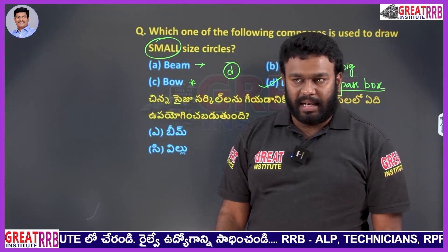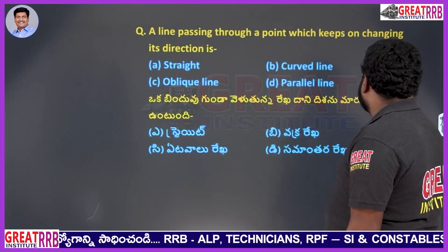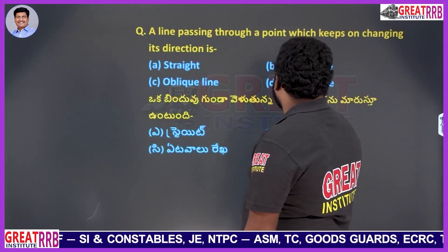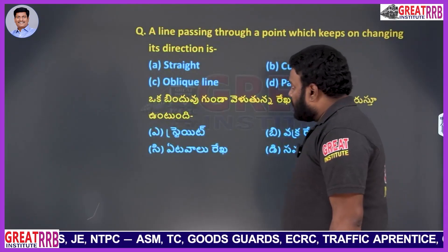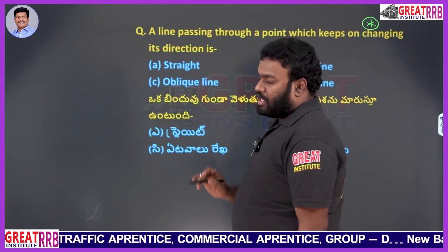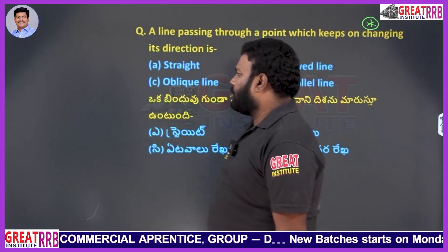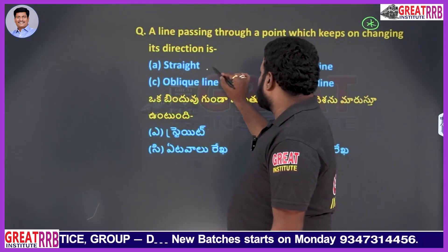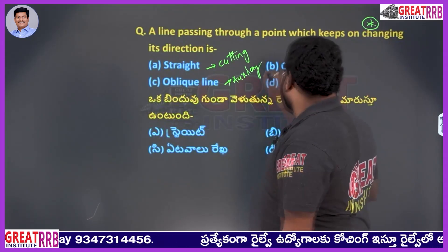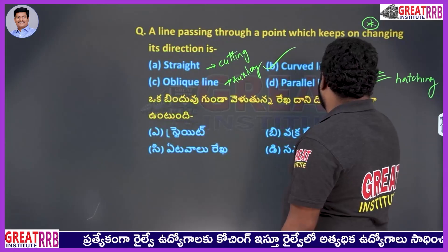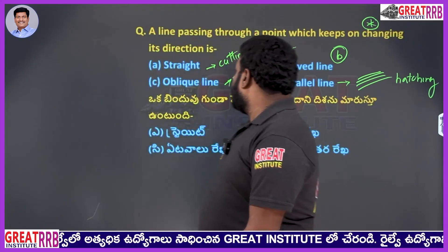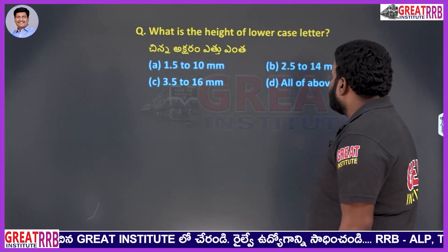A line passing through a point which keeps on changing its direction: options are A) straight lines, B) curved lines, C) oblique lines, D) parallel lines. Straight lines don't change direction; oblique lines are at 45 degrees for auxiliary views; parallel lines are used for hatching. A curved line is one whose direction keeps changing, so option B, curved lines, is the right answer.